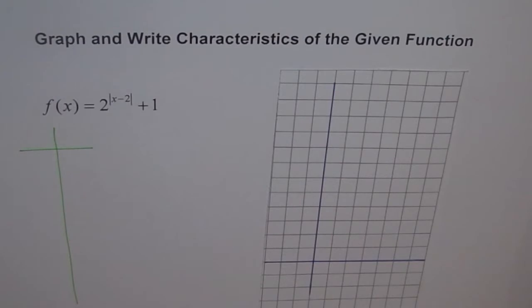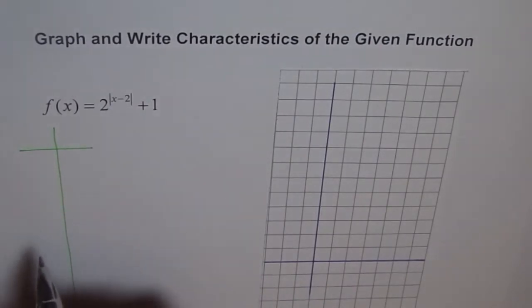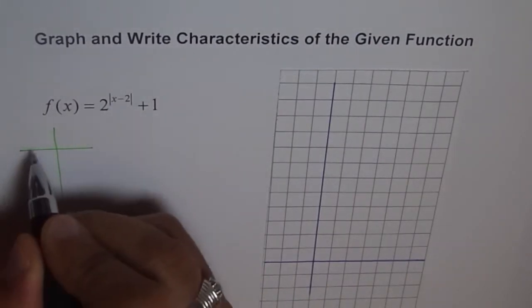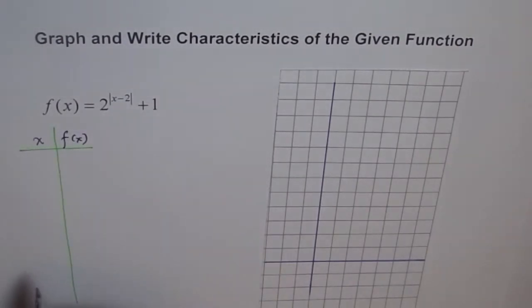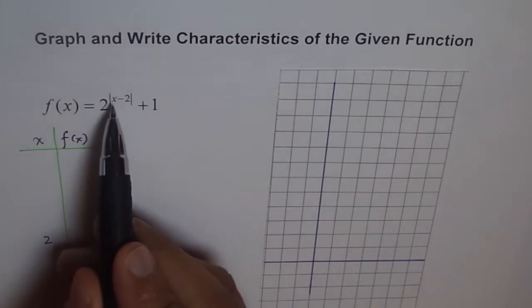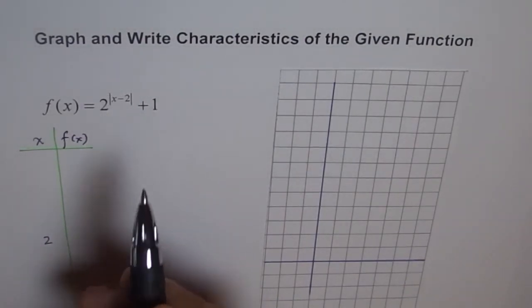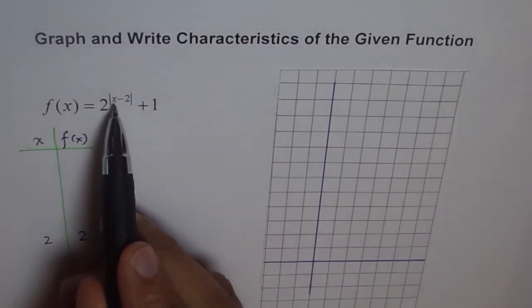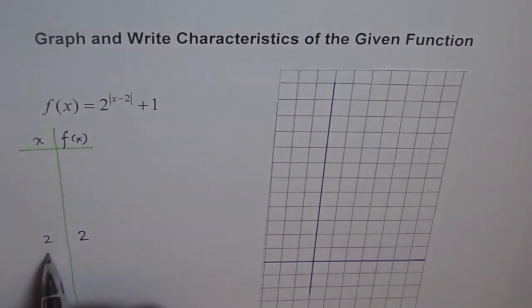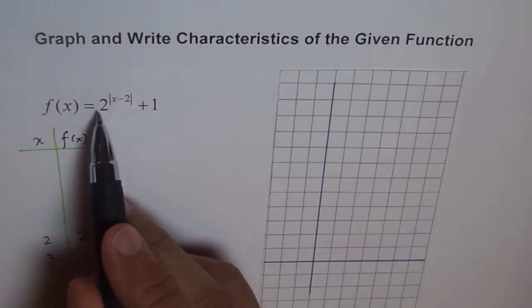Let's consider x equals 2 as our starting point. These are my x values and this is f(x). If x is 2, then 2 minus 2 is 0, 2 to the power of 0 is 1, and 1 plus 1 is 2. If x is 3, then 3 minus 2 is 1, 2 to the power of 1 is 2, and 2 plus 1 is 3.